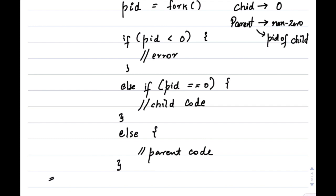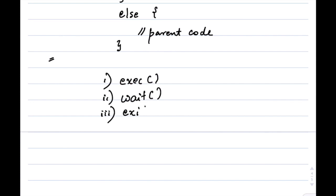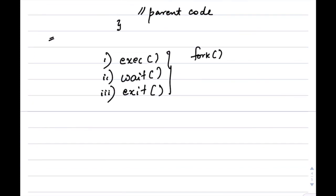In the next video, we are going to look at three other system calls used in process creation: exit, wait, and _exit. We have covered fork in this video, and next we'll discuss how these three functions can be used to modify the behavior of parent and child processes.